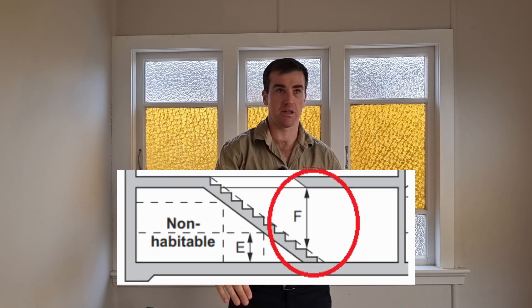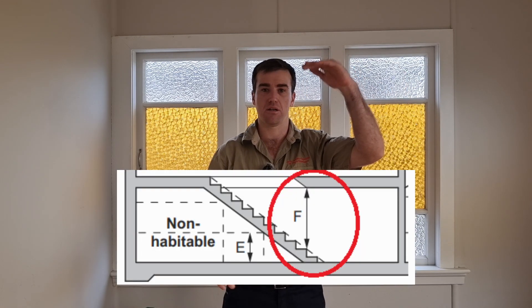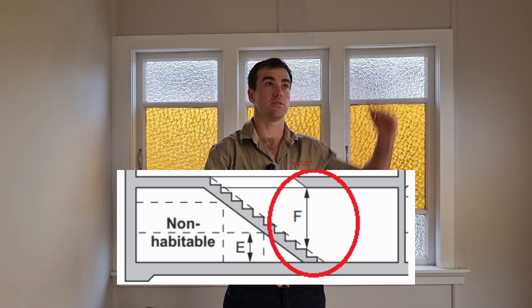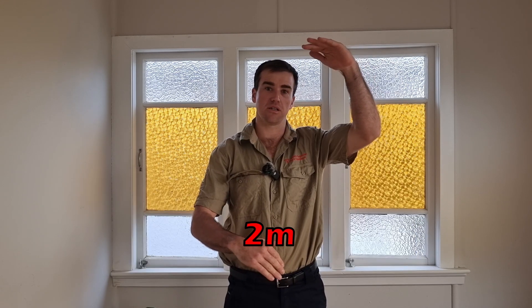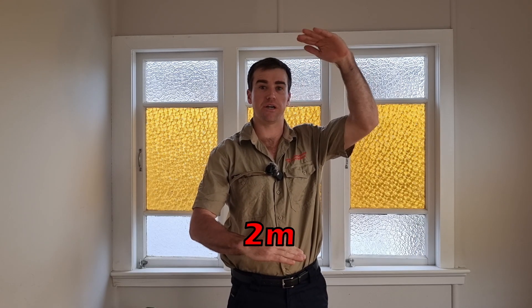One more measurement to look out for when it comes to room heights: when you have a set of stairs going down and another ceiling coming in, the point from the stair nosing to that ceiling has to be a minimum of 2 meters.